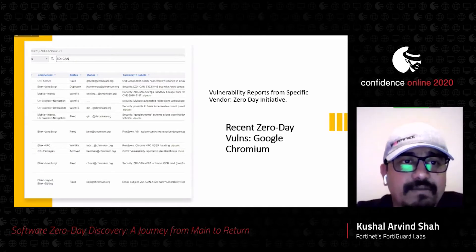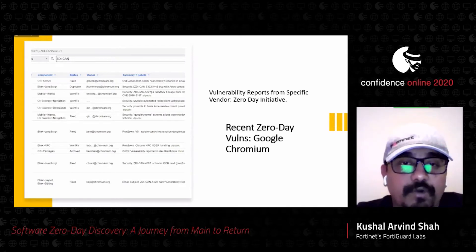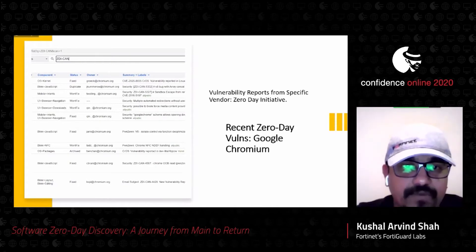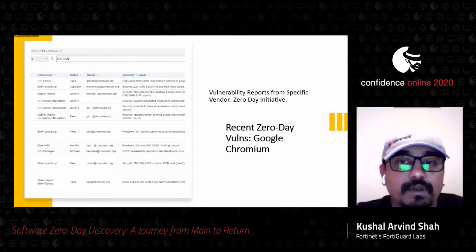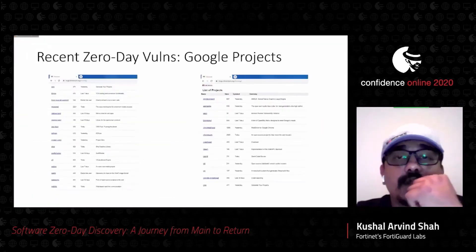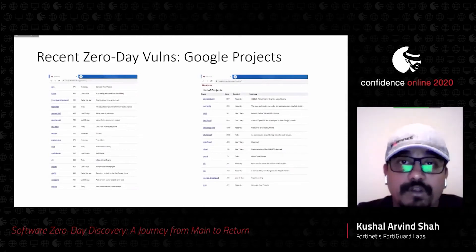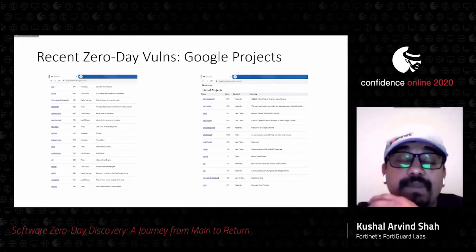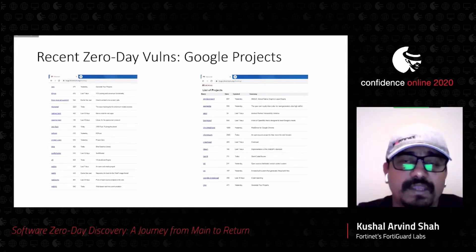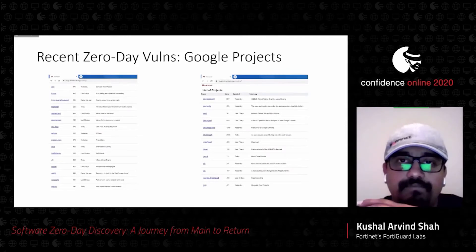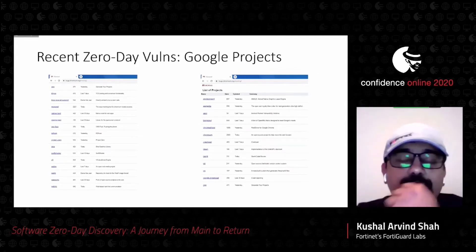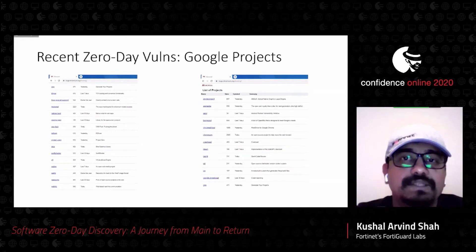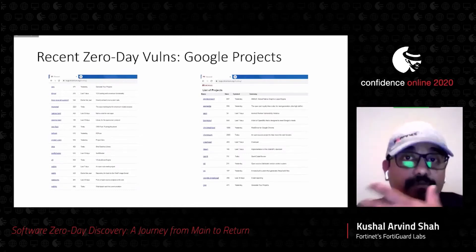You can also see ZDI-CAN reports — that's the Zero Day Initiative — and find POCs in them, including recent CVEs. Google maintains several open-source projects like LibAngle, WebP, WebM, Skia, and PDFM, which are embedded in Chrome browser and Chromium OS. Most bugs from these projects don't make it to the Chrome bug tracker, but they are a good place to look for seeds if you're interested in fuzzing and finding bugs.